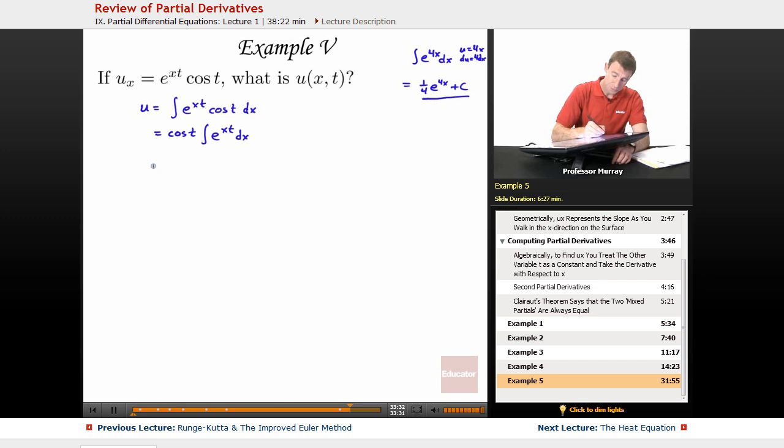So here, we've got cosine of t. Now, you want to think about this as e to the tx, where t is a constant, so it's kind of behaving like the 4 here. So instead of 1/4 e to the 4x, I get 1 over t times e to the tx. It's just like the 4 was before, now we have this t.